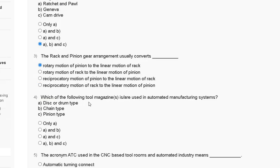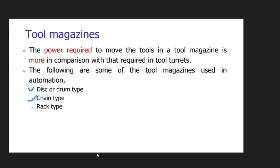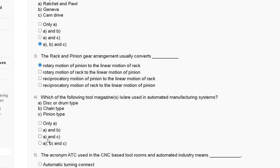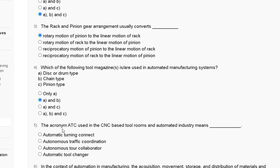Question number four: which of the following tool magazines are used in an automated manufacturing system — first, index type; second, drum type; third, chain type; fourth, pinion type? The following are some tool magazines used in automation: index type, drum type, chain type, and rack type. So the correct answer to question number four is option B — not pinion type.